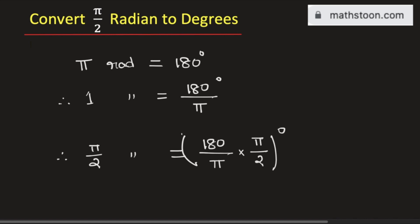Now, if we simplify it, we see that pi and pi get cancelled, and if we divide 180 by 2, we get 90. So, this is equal to 90 degree.